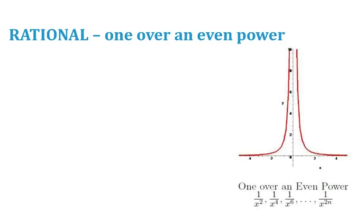Rationals where you have one over an even power just means that your pieces are doing the same thing. So we have either both pieces up top here or both pieces down low.